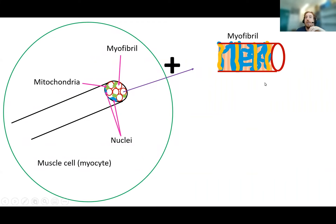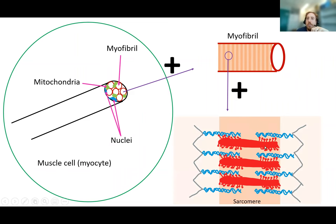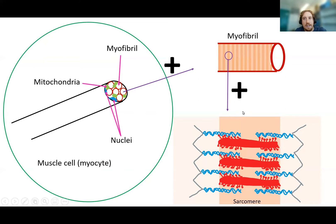So let's zoom in on that myofibril. When we zoom in, it's surrounded by an organelle called the sarcoplasmic reticulum and also the T-tubule system. That's important for its activation, but that's a topic for another day. Looking at the myofibril itself, what we can see is that it contains lots and lots of sarcomeres next to each other and on top of each other — that's all a myofibril is: lots of these sarcomeres.